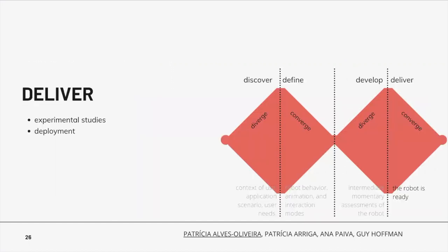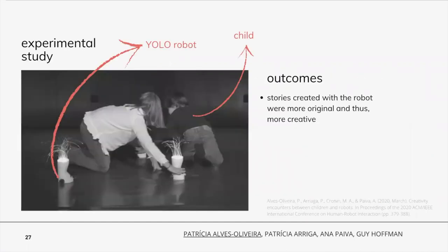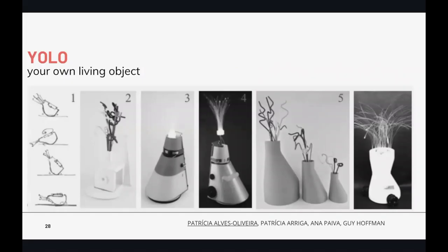The last stage is deliver, where the robot design is finished. Robots are generally deployed or used in experimental studies at this stage. We performed a study in school with the latest version of our robot, and our results show that when children played with the full version of the YOLO robot, their stories were more original and therefore more creative. Here you can see the progression of the YOLO robot during the design process, from sketches to different prototypes.